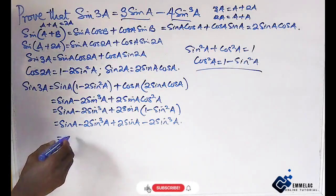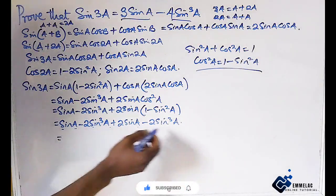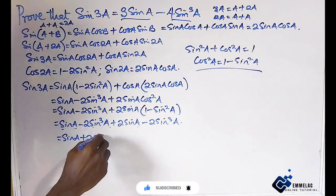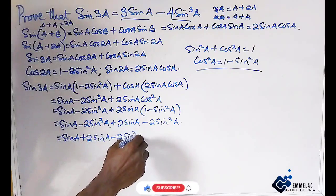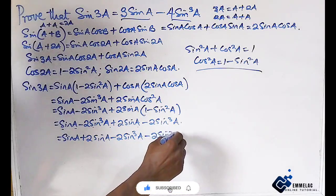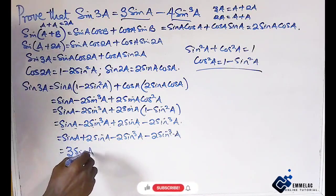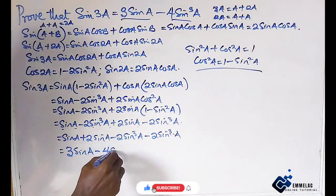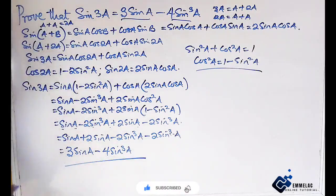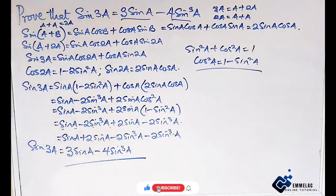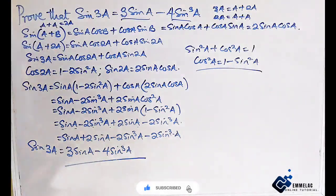Now let us collect like terms. We can see that sine a and 2 sine a group together, and the sine cubed terms group together. So we have sine a plus 2 sine a, which gives 3 sine a, then minus 2 sine cubed a minus 2 sine cubed a, giving minus 4 sine cubed a. Finally, we have proven that sine 3a equals 3 sine a minus 4 sine cubed a. This is the solution. If you love what I've done, please subscribe to my YouTube channel and click the notification button to be notified of all my videos. Thank you, and God bless you.